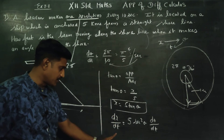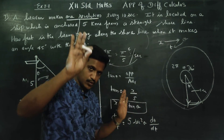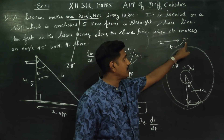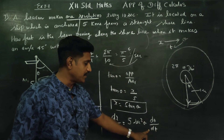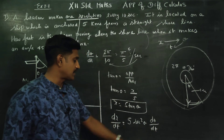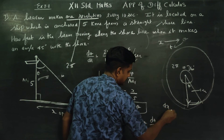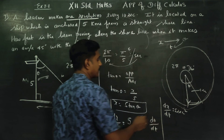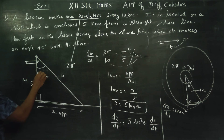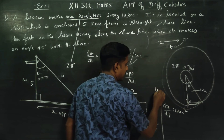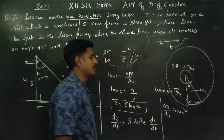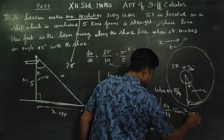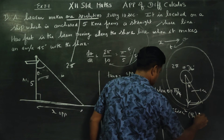Differentiating x = 5·tan θ with respect to t using the implicit function rule — since both x and θ are functions of t — we get dx/dt = 5·sec²θ · dθ/dt. Now applying θ = 45 degrees: dx/dt = 5·sec²(45°) · dθ/dt.